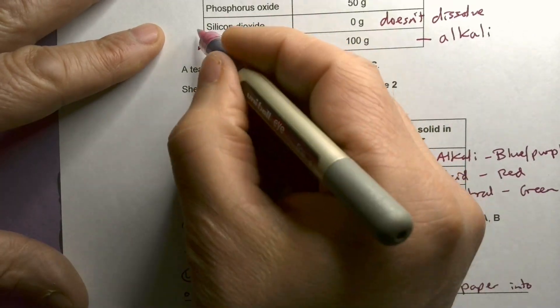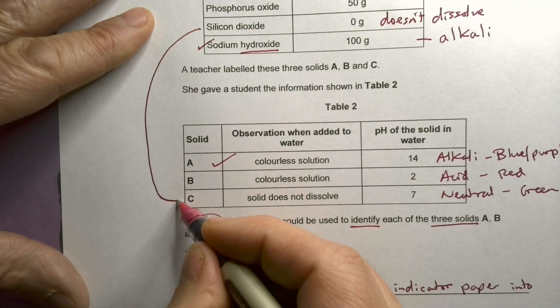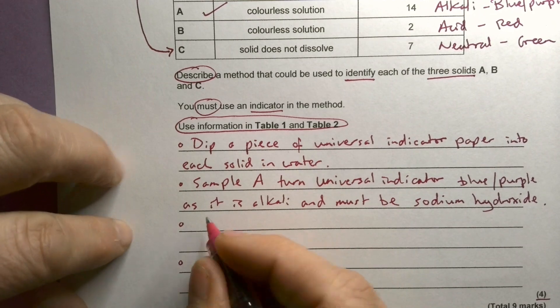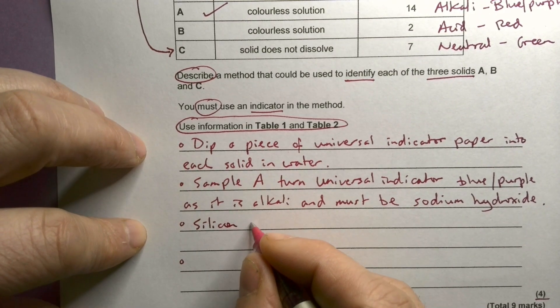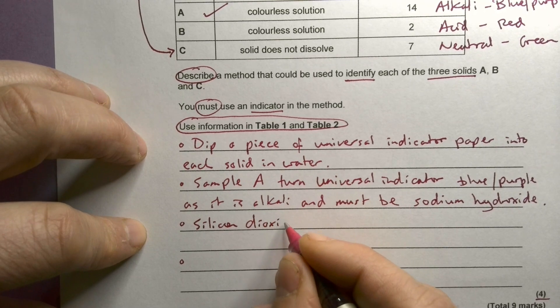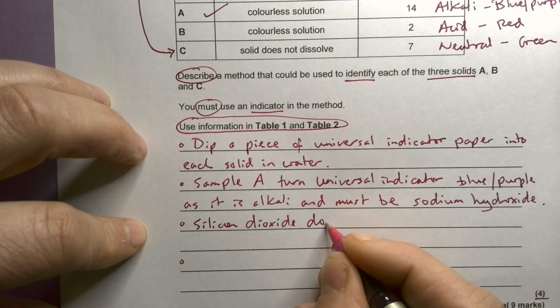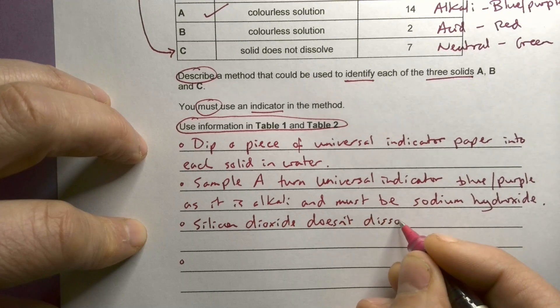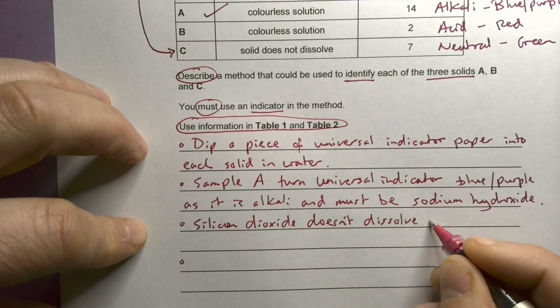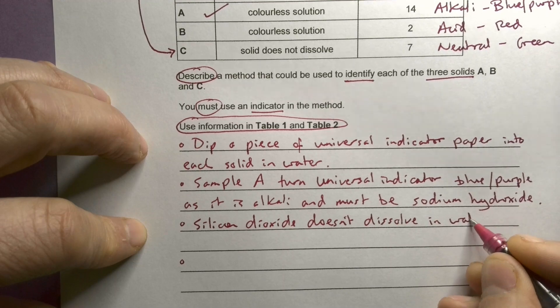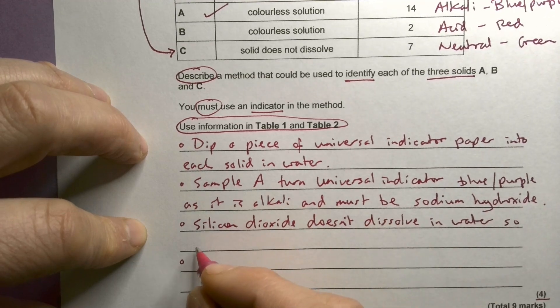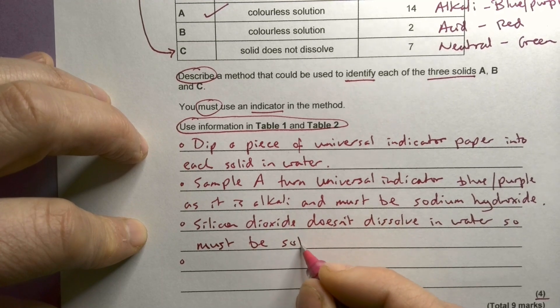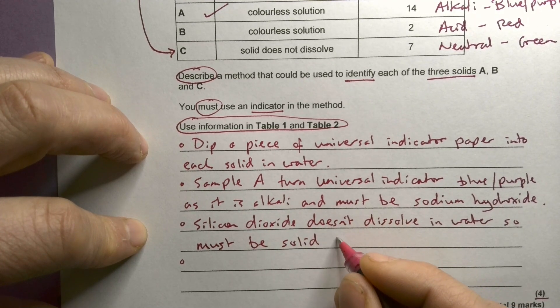I know, silicon dioxide, there must be that one there. So silicon dioxide doesn't dissolve in water. So it must be solid C.